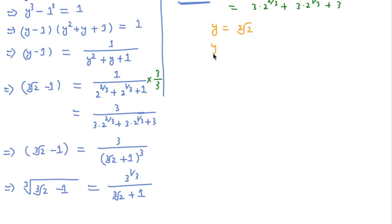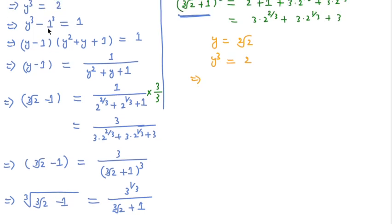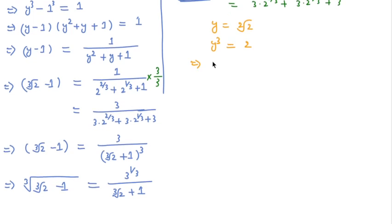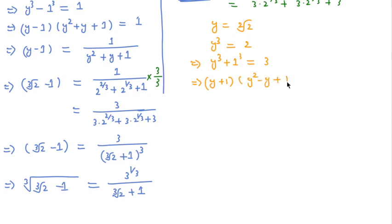Cubing both sides and this time adding 1 to both sides: y³ plus 1 equals 3. Using the a³ plus b³ formula, we can write (y plus 1)(y² minus y plus 1) equal to 3.